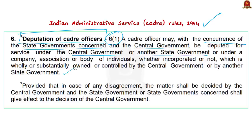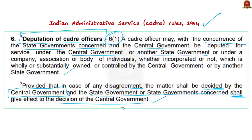In case of disagreement, the 1954 rules provide a remedy. There is a custom that an officer will not be deputed against her or his will. However, Rule 6 Clause 1 also states that in case of any disagreement, the matters shall be decided by the central government, and the state government has to give effect to that decision. This provision was invoked by the central government to recall the Chief Secretary of West Bengal.